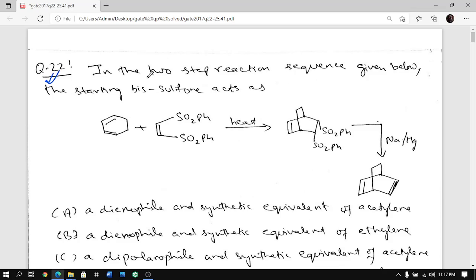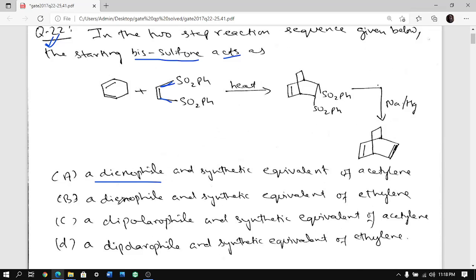It says in the first two step reaction sequence given below, the starting bisulfonate (bis means dye, but when dye is already there we use the word bis). The choices given are a dienophile, a dipolarophile, and synthetic equivalent of acetylene and synthetic equivalent of ethylene.